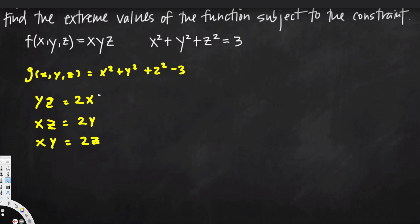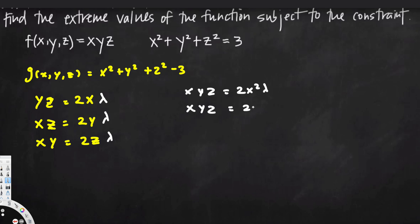We multiply the partial derivatives of g by lambda. Then we multiply the first equation by x, the second by y, and the third by z on both sides. This gives us: xyz = 2x²λ, xyz = 2y²λ, and xyz = 2z²λ.